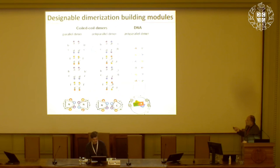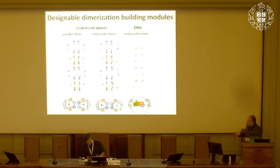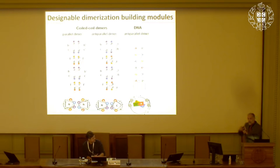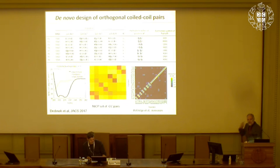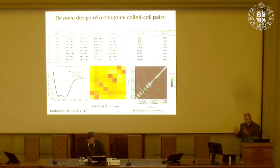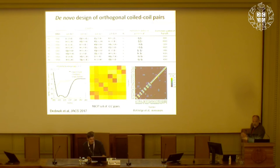We need building blocks similar to the complementarity of base pairs. We realized that coiled-coil dimers are an excellent building block — with coiled-coil dimers, we can design sequences based on hydrophobic and electrostatic interactions to design peptides that specifically bind to each other. Moreover, we can design them to assemble in a defined orientation — either anti-parallel like DNA, or parallel dimers. We expanded the set of orthogonal peptide pairs to about 20, much larger than what is known from nature.